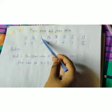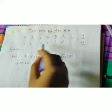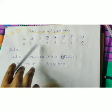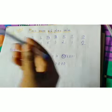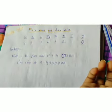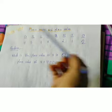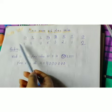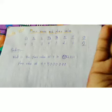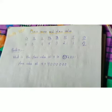Seven is in which place? Seven is in the lakh place, so the place value will be seven lakh. Five is in the ten lakh place, so the place value will be fifty lakh. Four is in the crore place, so the place value will be four crore.